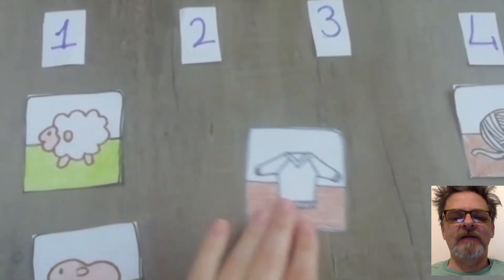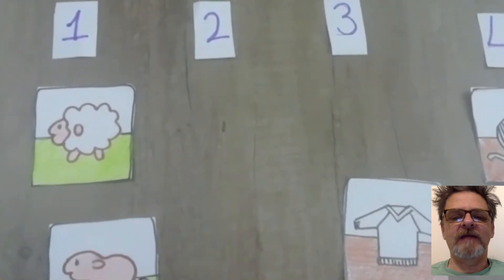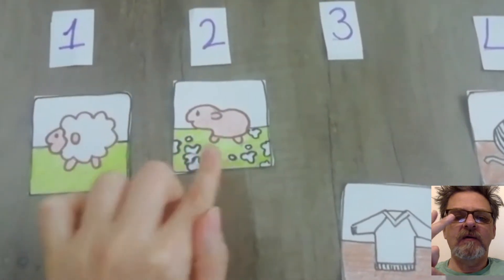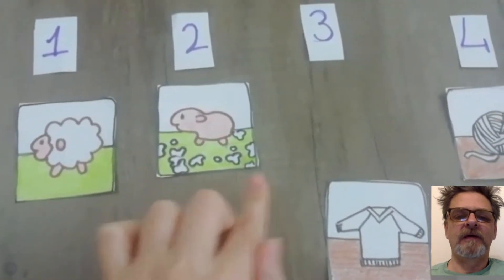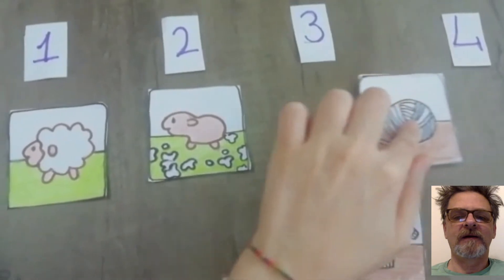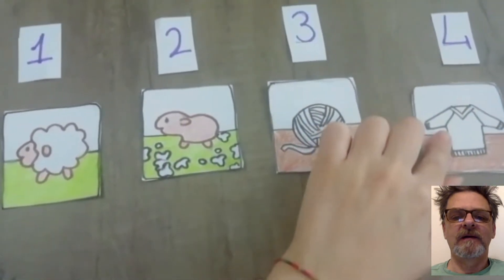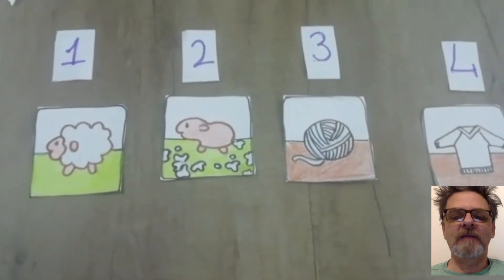And the next part is when the sheep get sheared. They get scissors and they cut all the wool off the sheep. She's got no wool on it. And then, then we got the ball of wool. Wool, and then we make the jumper.